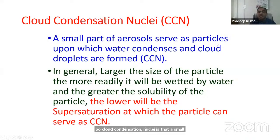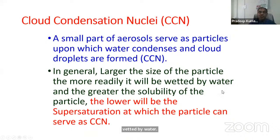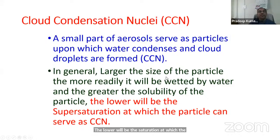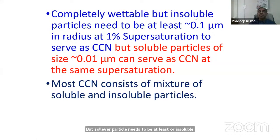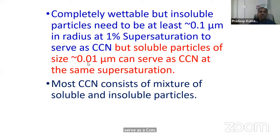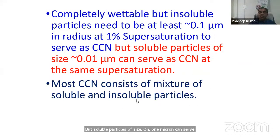CCNs are a small part of aerosols which serve as particles upon which water condenses and cloud droplets are formed. In general, the larger the size of the particle, the more readily it will be wetted by water, and the greater the solubility of the particle, the lower the saturation at which the particle can serve as a CCN. A completely wettable but insoluble particle needs to be at least 0.1 micron in radius at 1% supersaturation to serve as a CCN, but soluble particles of size 0.01 micron can serve as CCN at the same supersaturation. Most CCNs consist of a mixture of soluble and insoluble particles, either internally or externally mixed.